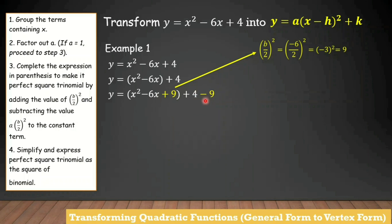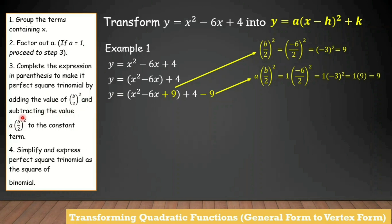Next, how did we get negative 9? Still in step 3 — the step says subtract the value of a times quantity b over 2 squared from the constant term. The value you got from b over 2 squared is multiplied by the value of a. Since the value of a here is 1, we multiply 9 times 1, and we still get 9. The reason it becomes negative is because the step says subtract — so we place a minus sign.